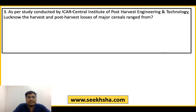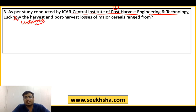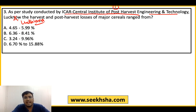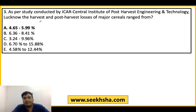Next question: As per the study conducted by ICAR Central Institute of Post Harvest Engineering and Technology — note, this is located in Ludhiana, not Lucknow as mistakenly written. The question asks about the range of harvest and post-harvest losses for major cereals. Options: A. 4.65 to 5.99%, B. 6.36 to 8.41%, C. 3.24 to 9.96%, D. 6.70 to 15.88%, E. 4.58 to 12.44%. The right answer is Option A: 4.65% to 5.99%.